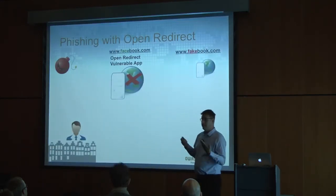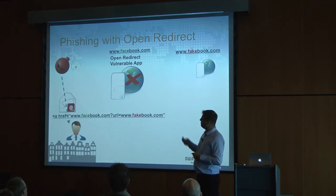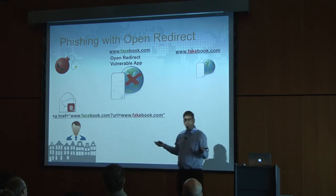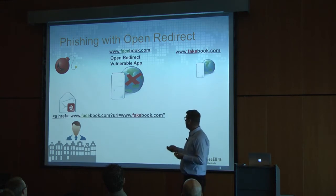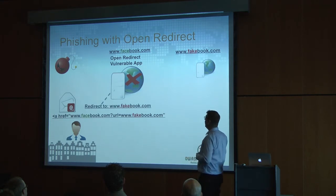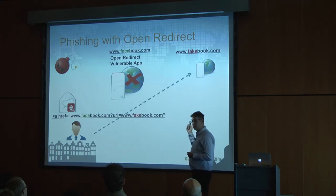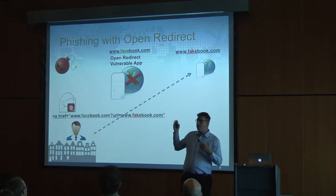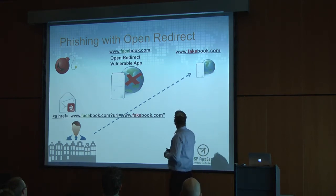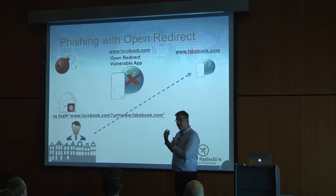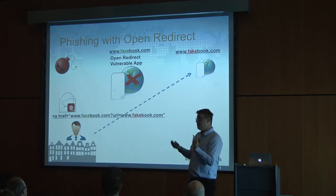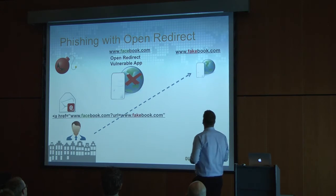How does open redirect look in a phishing attack? First step: a malicious actor sends me an email with a link to facebook.com, which is an application I trust. Once I press that link, I'm redirected from facebook.com to facebook.com — which is obviously a malicious application. For example, assuming Facebook has a vulnerability in a URL parameter. Now I'm in front of facebook.com, which will look very similar to facebook.com, and they will try to steal my password or other credentials.